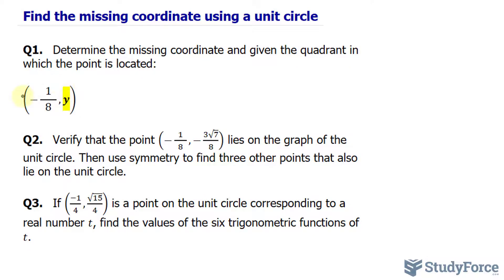So we have a point that's along the unit circle and we have the x coordinate being negative 1 over 8. We need to find the y coordinate. To do this, given that a unit circle is a circle, it follows the formula x squared plus y squared is equal to 1.